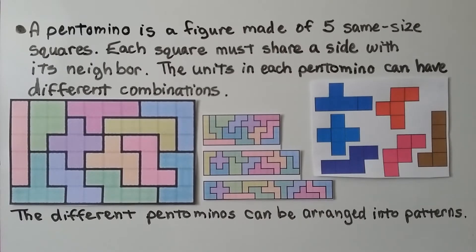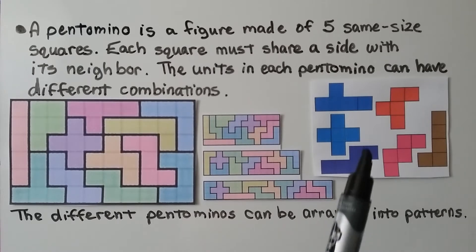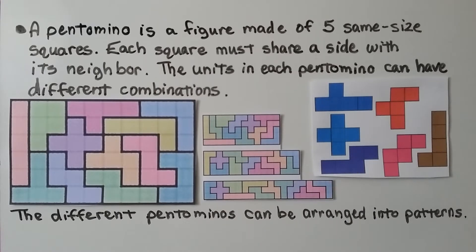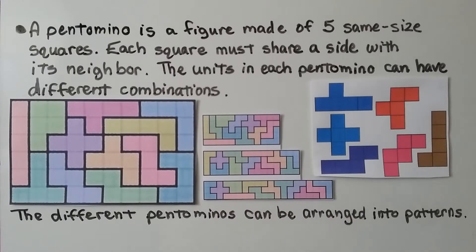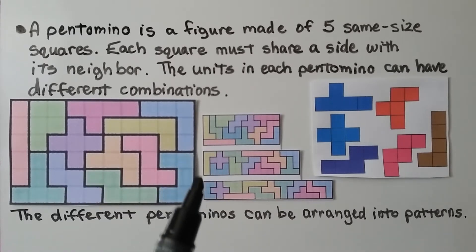A pentomino is a figure made of five same-size squares where each square must share a side with its neighbor. The units in a pentomino can have different combinations. Different pentominoes can be arranged into patterns — you can make many different pattern arrangements using them.